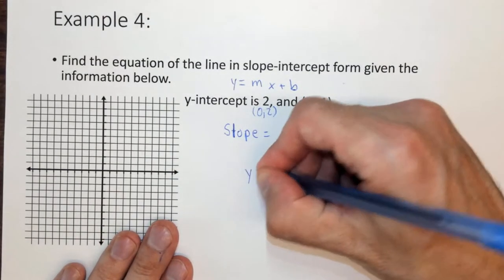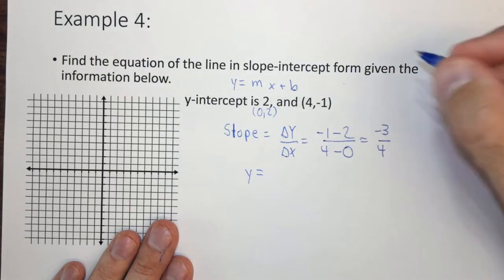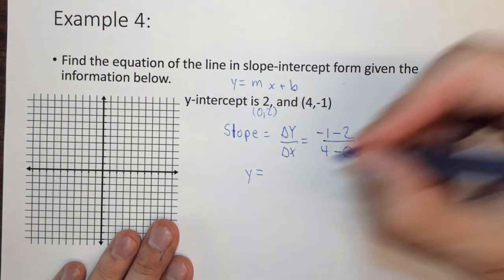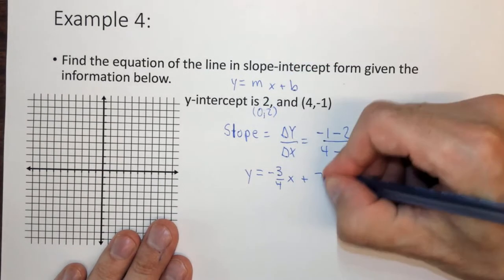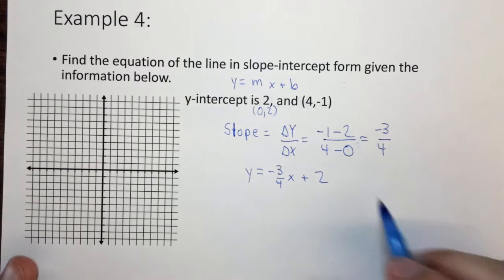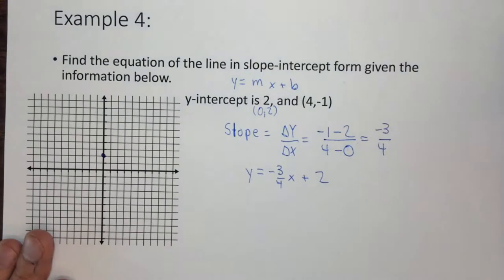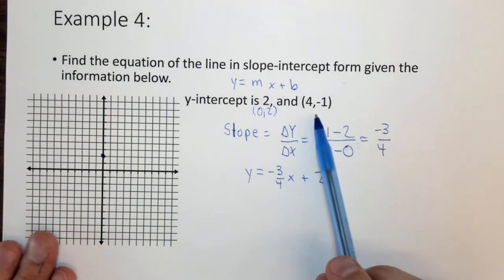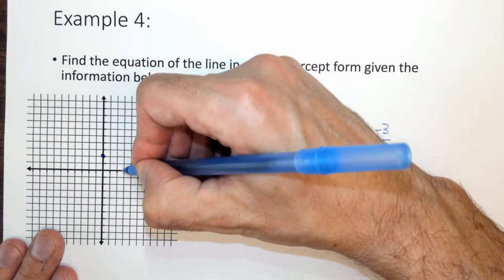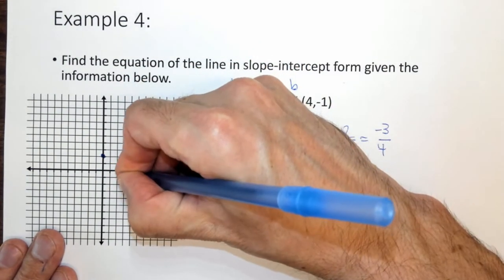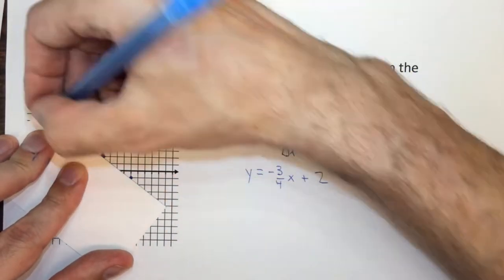So y equals negative 3 fourths x plus 2. Now if we wanted to graph this line, what we would do is we would go to the point y-intercept of 2, and we would also go to the point 4, negative 1. So that would be 1, 2, 3, 4, minus 1. And we could draw the line like this.